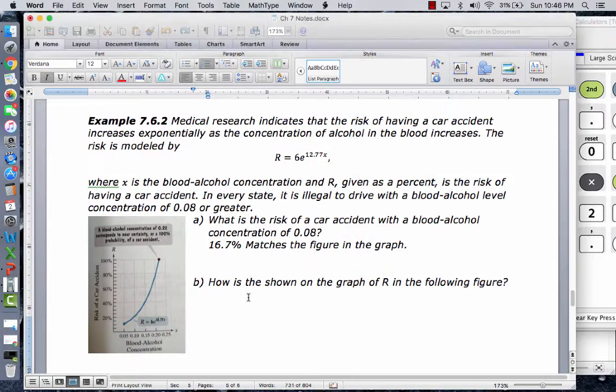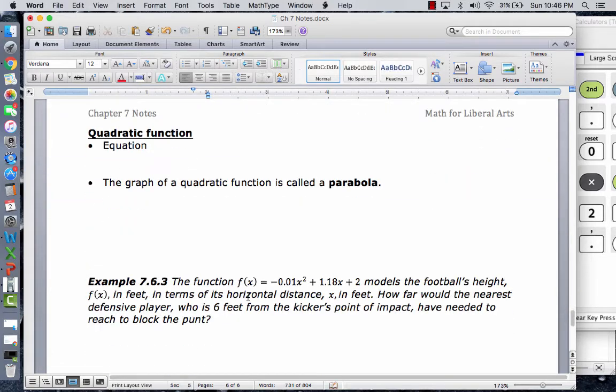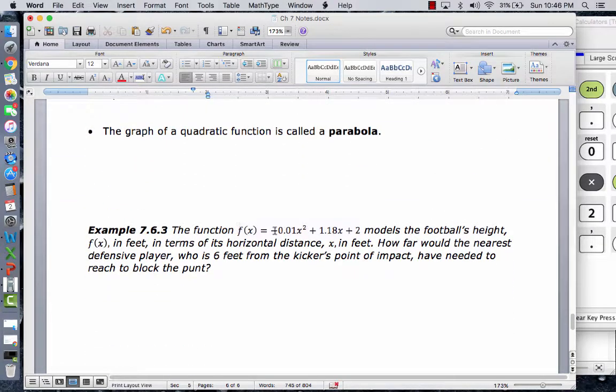Okay. Then let's show how to use a quadratic function. So here we have the function f of x is negative 0.01 times x squared plus 0.18 times x plus 2, models the football's height, which is f of x in feet.